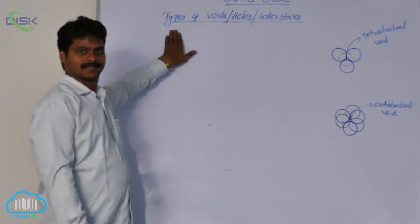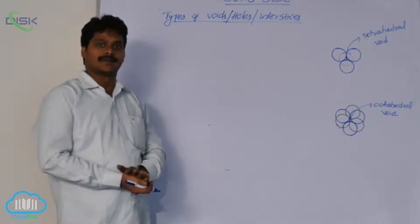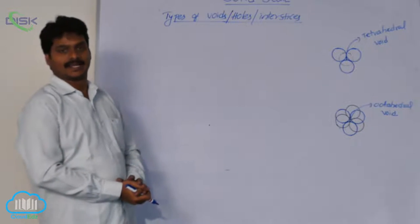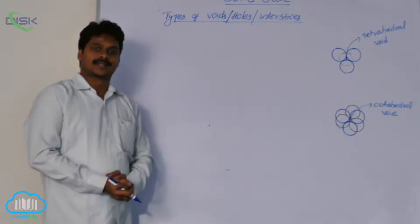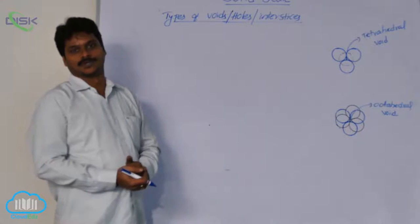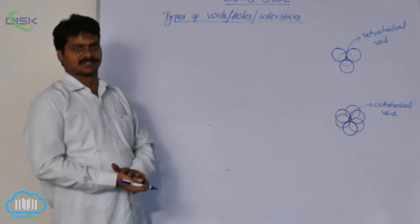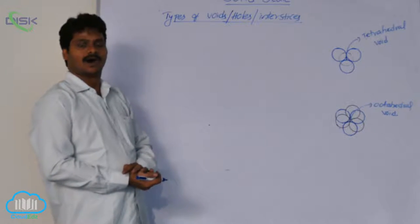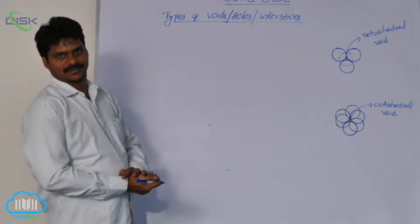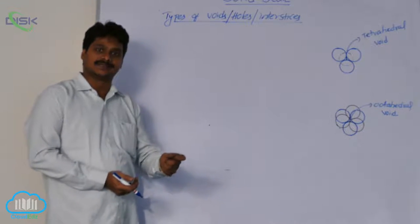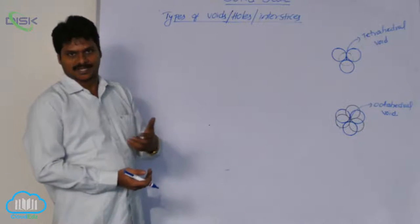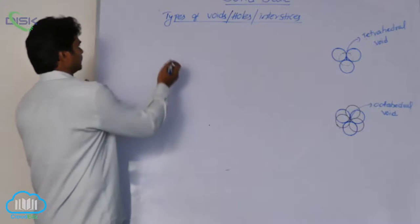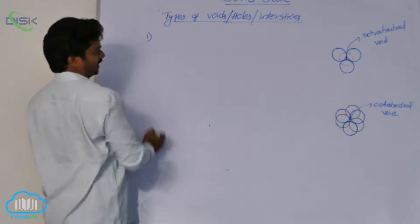There are two types of voids present in 3-dimensional close-packed structures of solids. Earlier, I discussed that these two types are tetrahedral void and octahedral void. In the formation of HCP and CCP close-packing structures, I explained about these two voids. Let us now see them in detail.